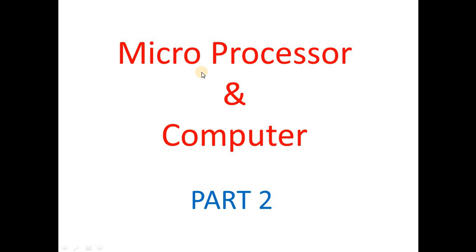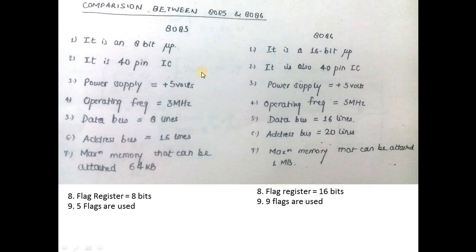Good morning friends, let's start with microprocessor and computer part 2. First of all, what is the difference between 8085 microprocessor and 8086 microprocessor? 8085 microprocessor is an 8-bit microprocessor whereas 8086 is a 16-bit microprocessor.